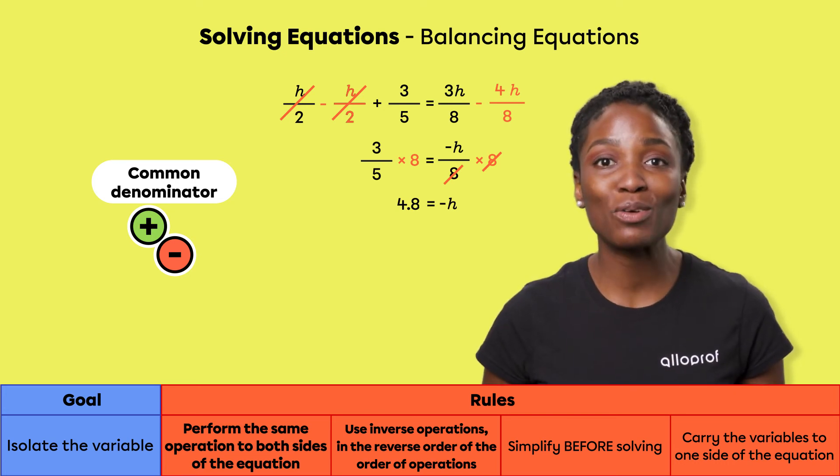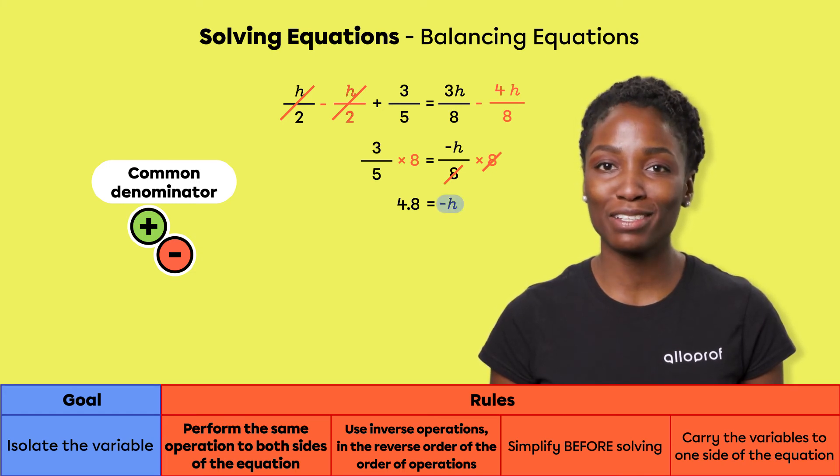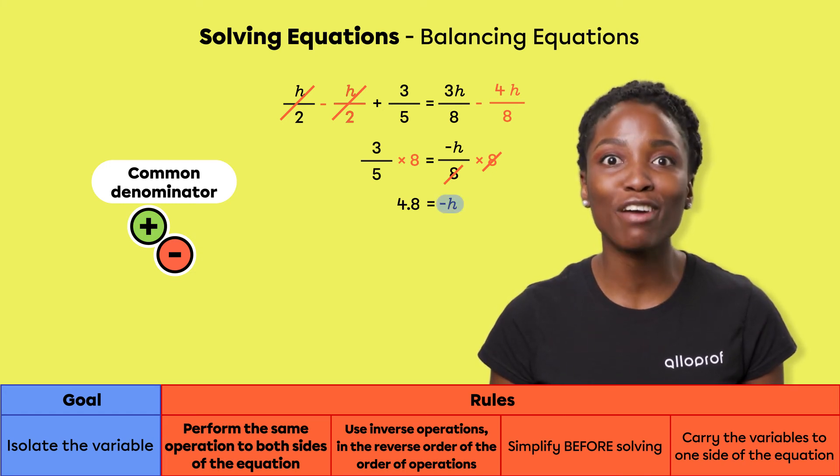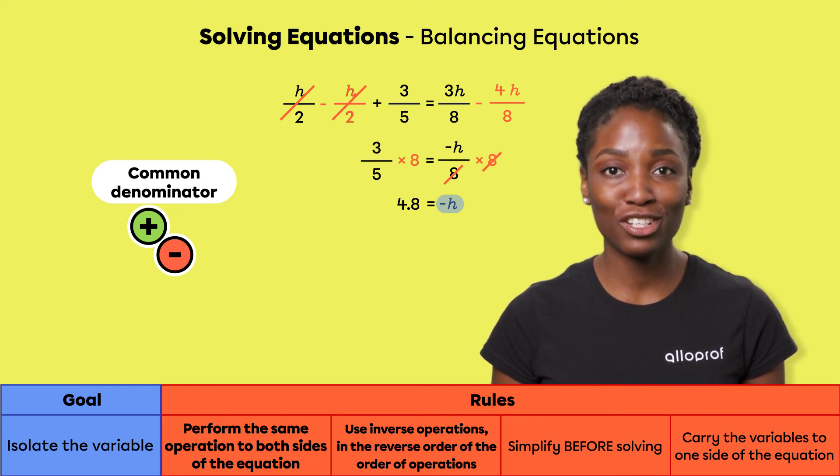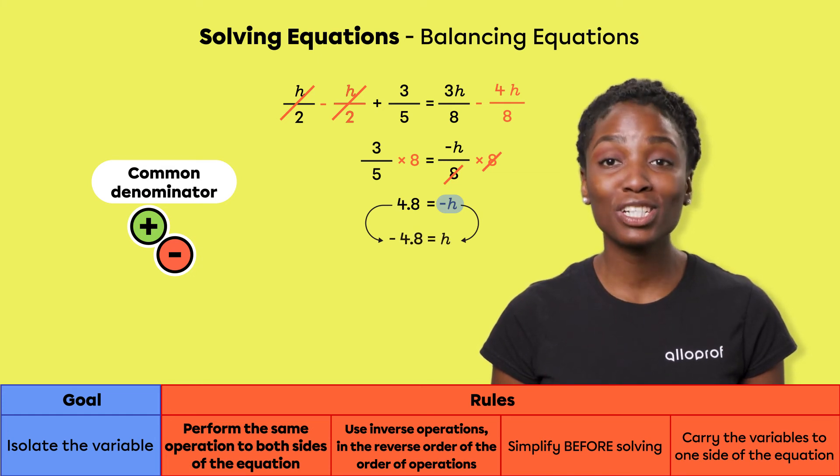We are very close to the finish line. However, we don't want the value of negative h, we want the value of h. If we want to go from negative h to h, we need to reverse the sign on either side of the equal sign. The solution is negative 4.8 equals h.